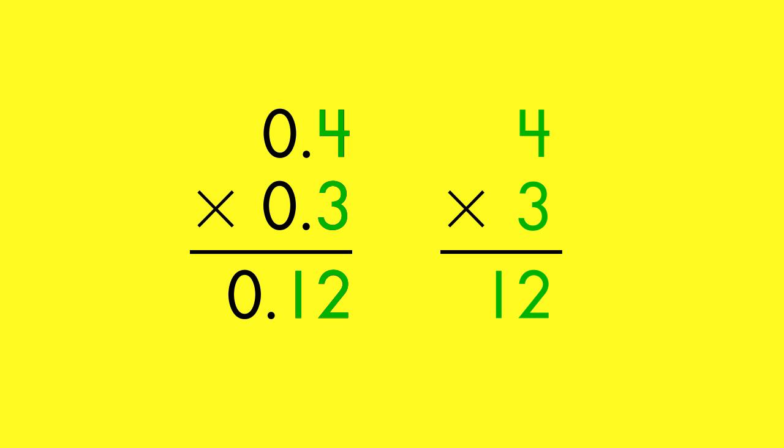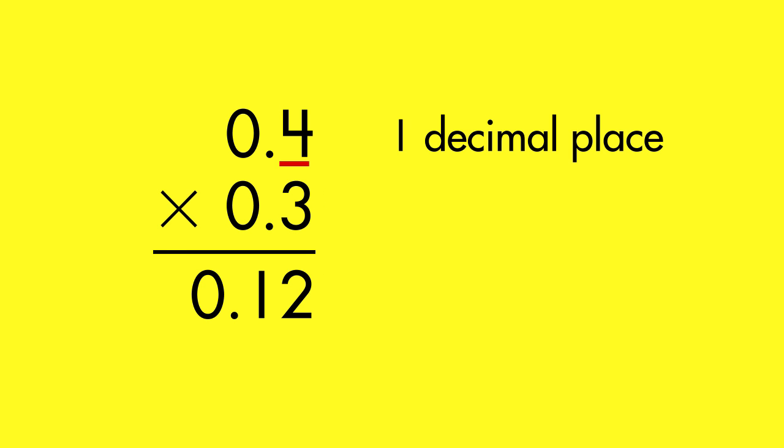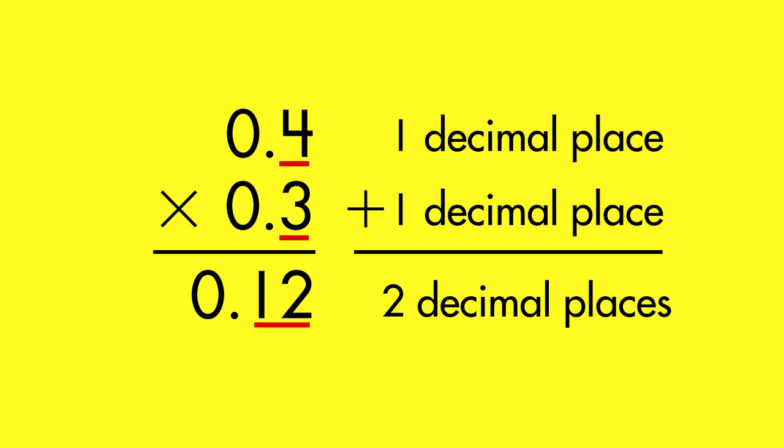Second, the number of decimal places in the product depends on the total number of decimal places in the factors. To find the correct number, count the decimal places in each factor. Then, add them together. This is the number of decimal places you need in your product.